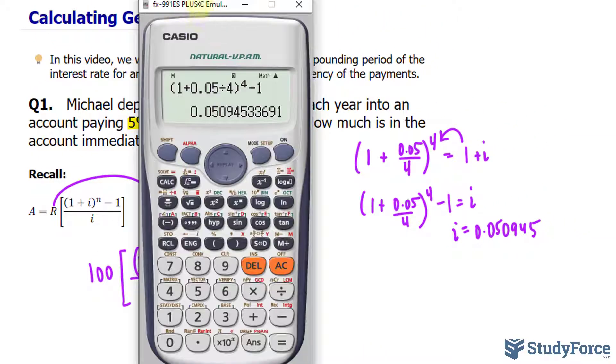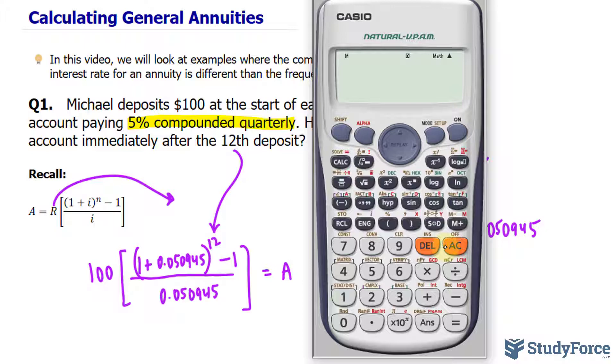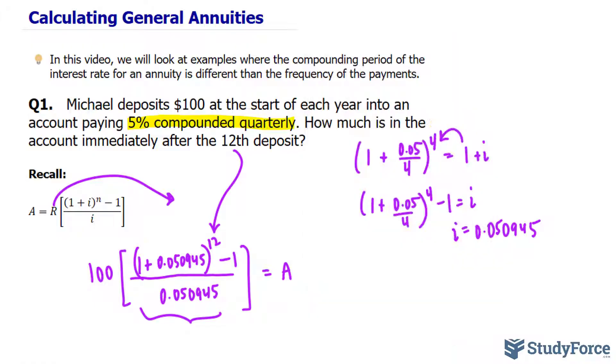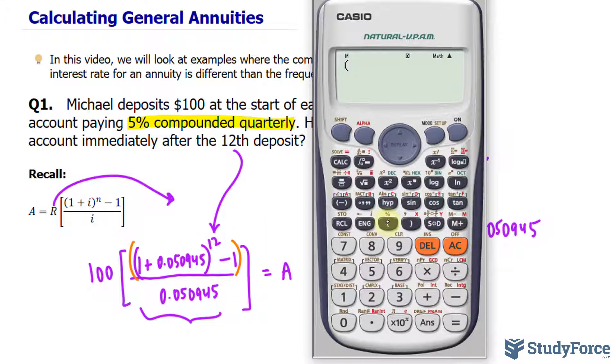Now we will find the accumulated value after 12 deposits. I'll begin by evaluating this part, then multiplying whatever I get by 100. In parentheses, you also want to open up another set of parentheses so you can do it all in one shot on your calculator. I've opened up the orange parentheses, the purple: 1 plus 0.050945, close parentheses, raise that to the power of 12, minus 1, close the orange parentheses, divided by 0.050945.